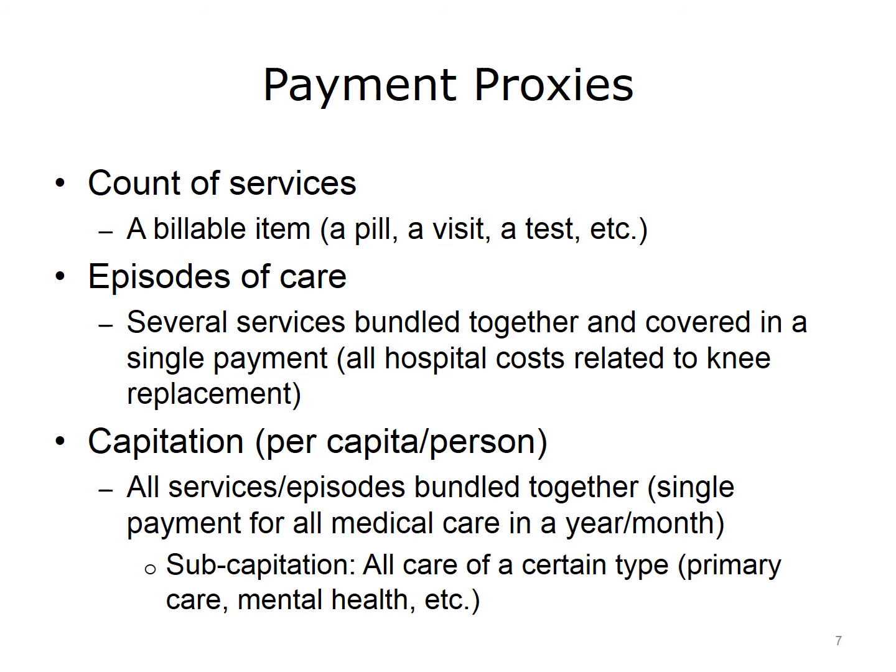A third payment model is the capitation model, which means payment per capita or per person. In this approach, a single payment is made per person regardless of how many services or episodes they need. It's also possible to capitate by type of service, called subcapitation — for instance, a single payment for primary care or mental health care per month to handle any services that might be needed. Each of these models creates different incentives to provide too much or too little care.